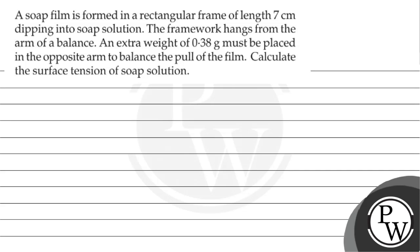Hello, so let's see the question. The question says that a soap film is formed in a rectangular frame of length 7 centimeter dipping into a soap solution. The framework hangs from the arm of a balance. It is given an extra weight of 0.38 gram must be placed in the opposite arm to balance the pull of the film. Calculate the surface tension of the soap solution.